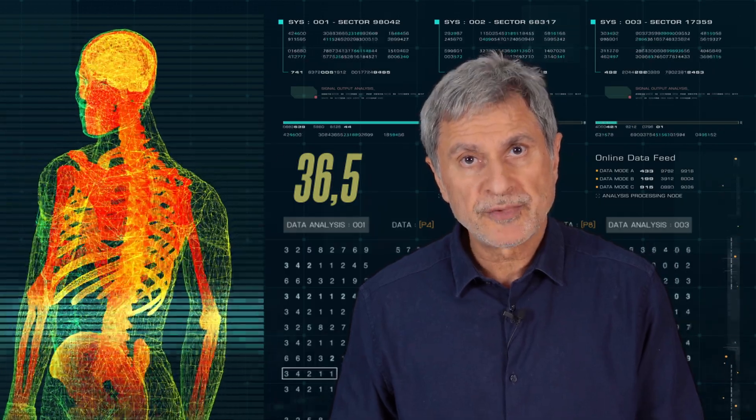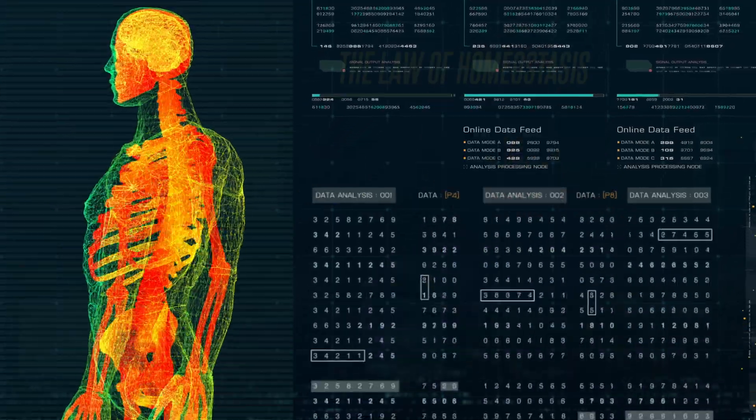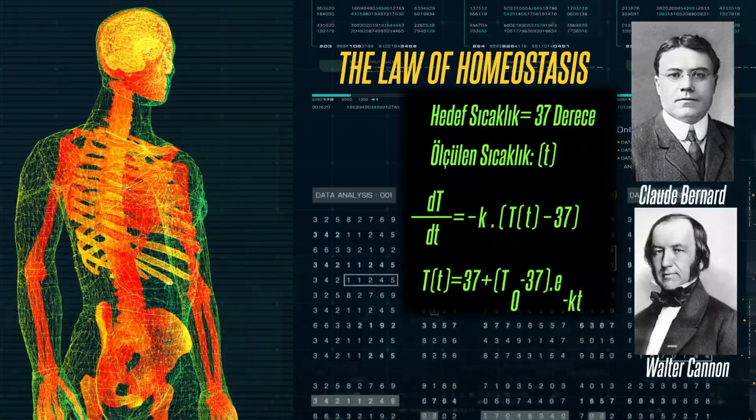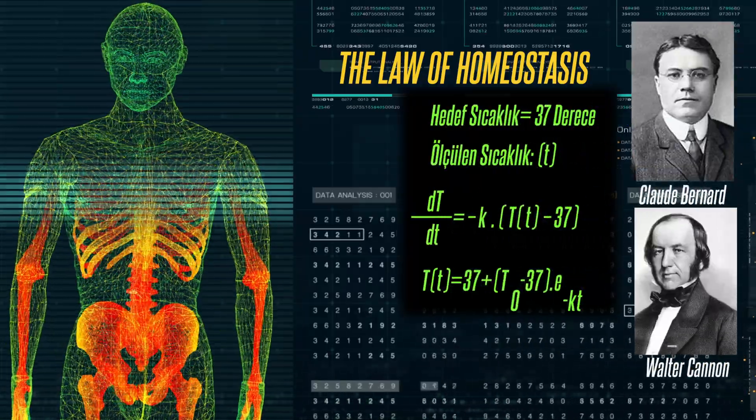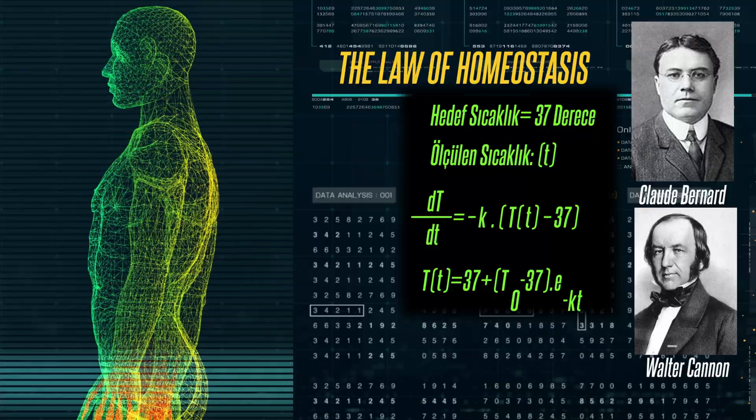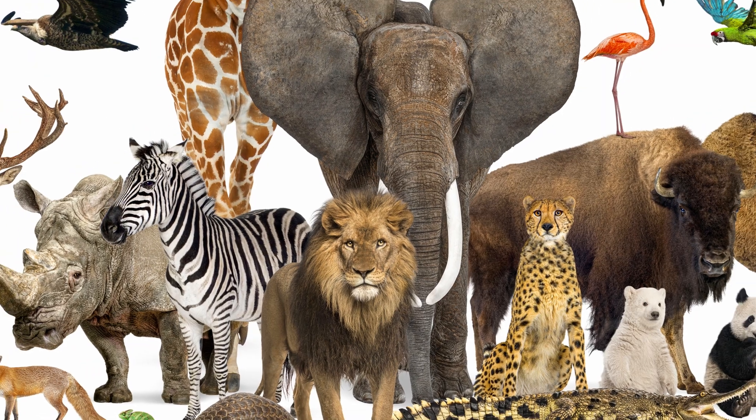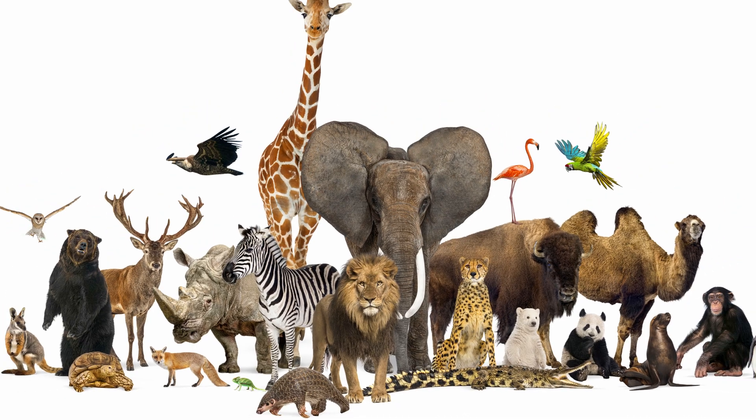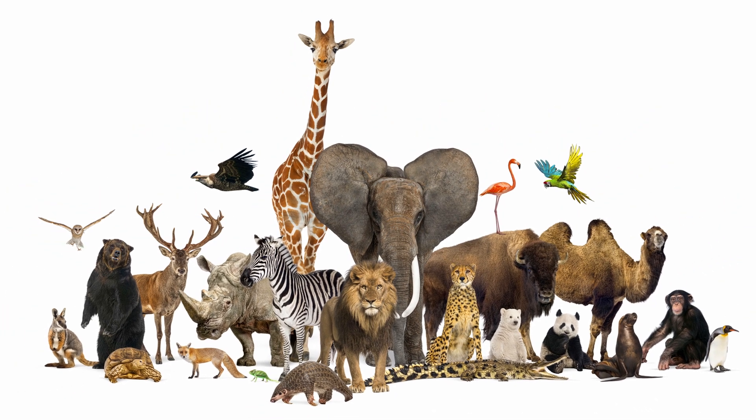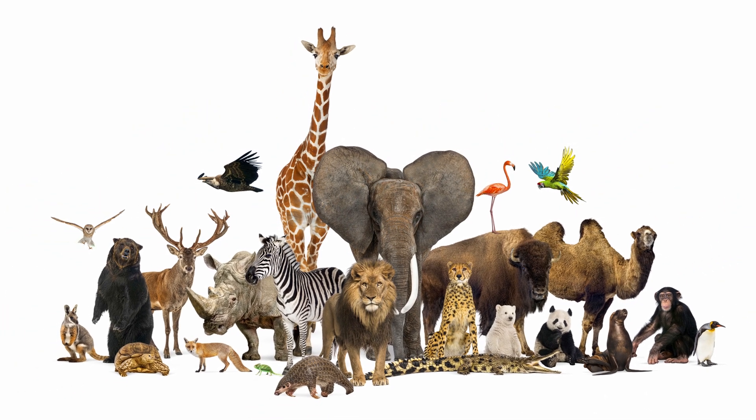My body temperature is 36.5 degrees. Working on my body for life, there is an air conditioning system. This is called the law of homeostasis. The law of homeostasis was discovered by Claude Bernard and Walter Cannon.